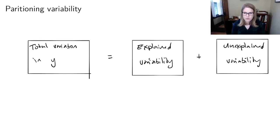And we'll often represent this variability in terms of sums of squares. So we call the total variation of S, the SST, the total sum of squares. We call the explained variability, the SSM, the model sum of squares. And we call the unexplained variability, the SSE, or the error sum of squares.